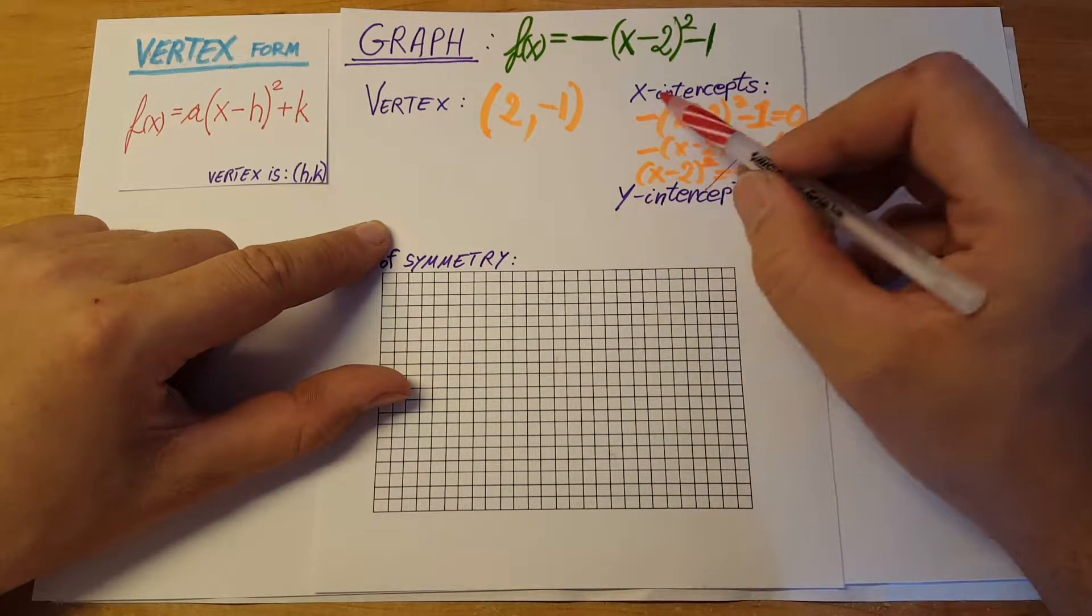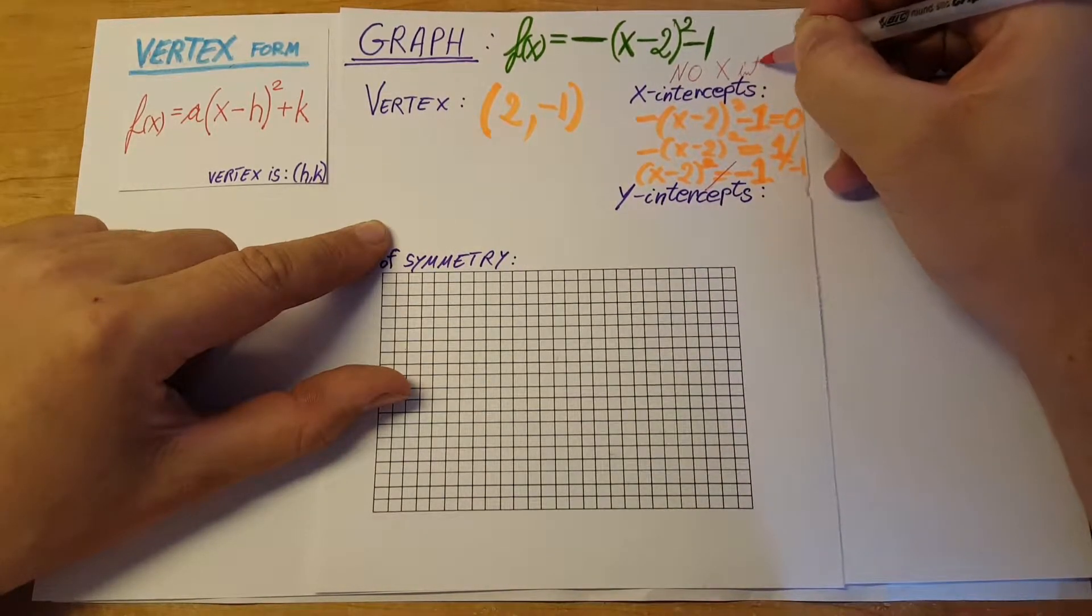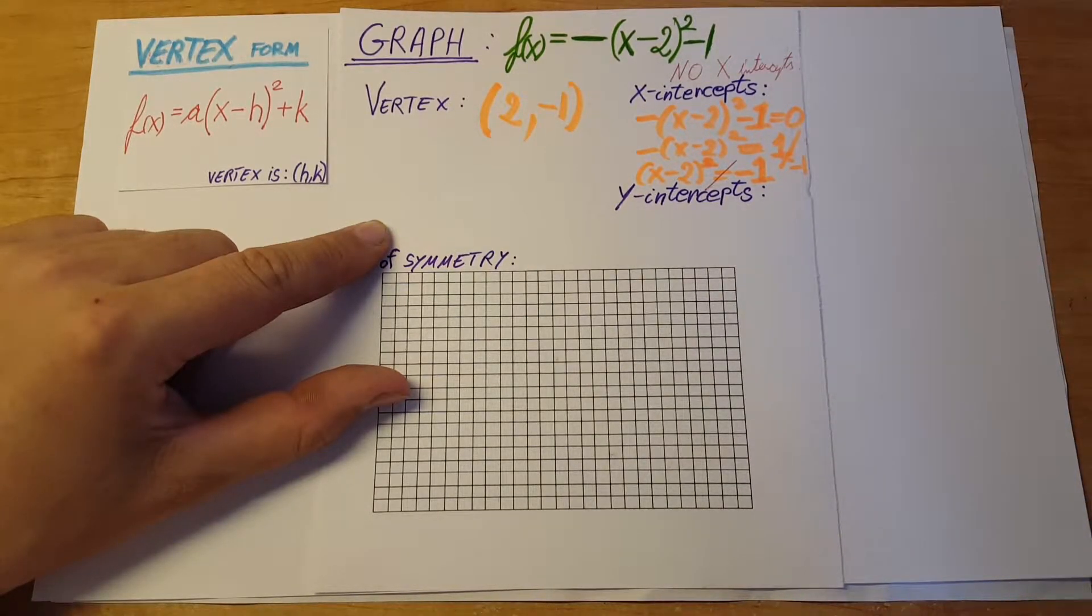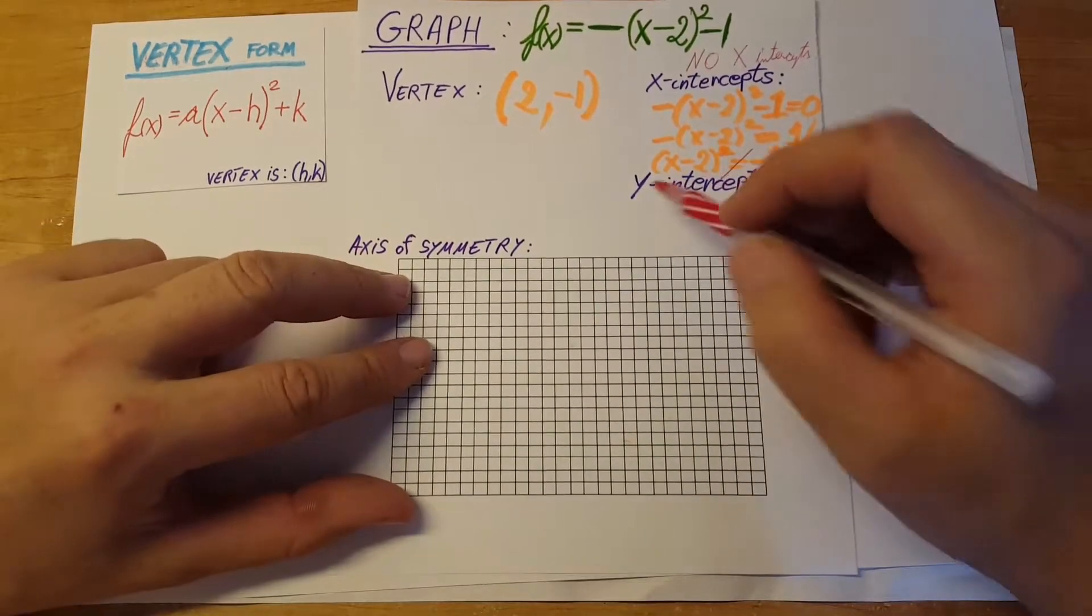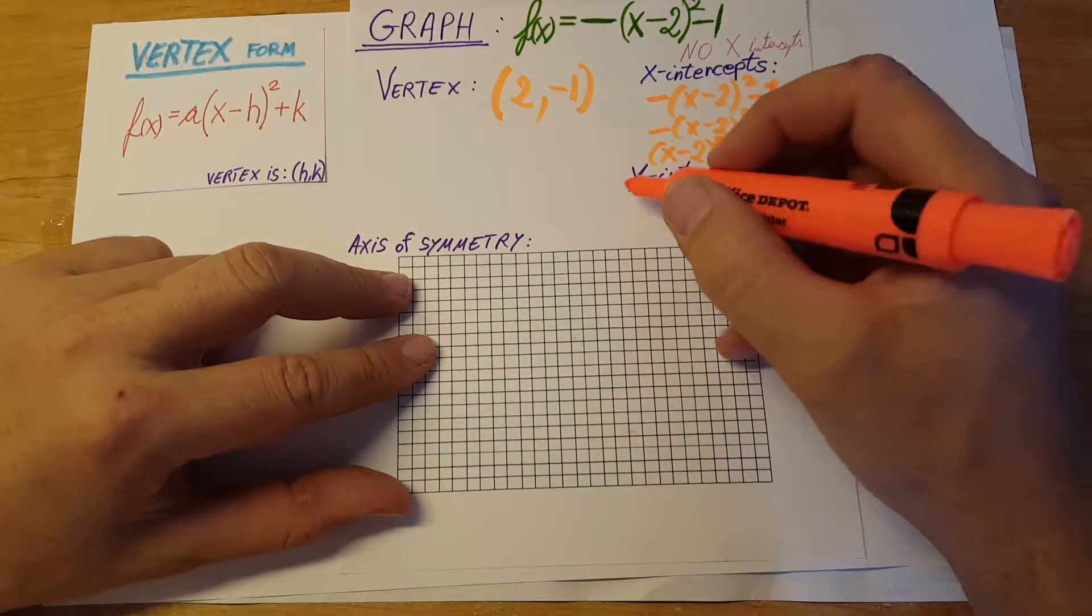Therefore we can cross it out and say there are no x-intercepts. Okay, let's see, what about the y-intercept?